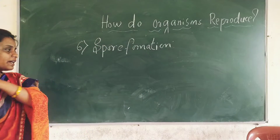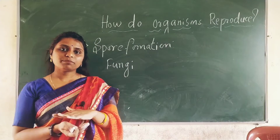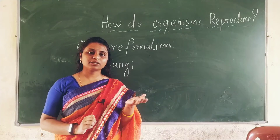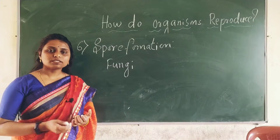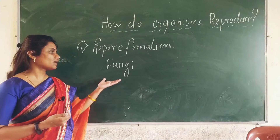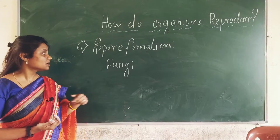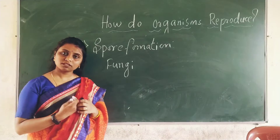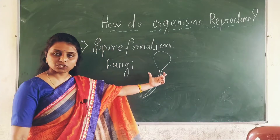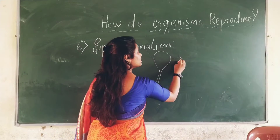Some fungi — for example bread mold — reproduce through spore formation. You can see fungi on bread. If you sprinkle water on bread and keep it in the shade, a small matty white structure will develop, which is fungi. It is a saprophyte that depends on dead and decaying material. This particular fungi reproduces through spore formation. It develops a sac-like structure called sporangium — a spore-containing vessel.